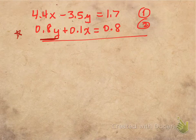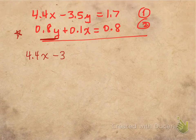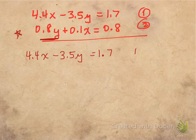So let's rearrange equation number 2. I'm going to rewrite this as 4.4x minus 3.5y is equal to 1.7. That's my equation 1.